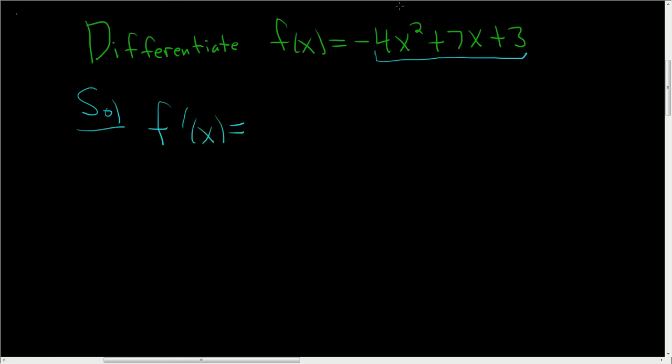Let's see. Here we have a 2, so that's going to come out front. So 2 times negative 4 is negative 8, so you get negative 8x. And then 2 minus 1 is 1, so you get x to the 1.